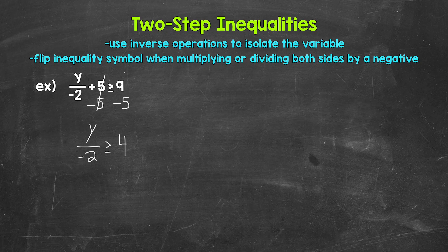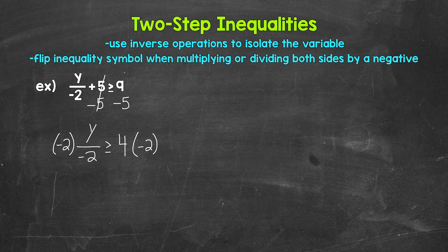So now we have y divided by negative two is greater than or equal to four. Since y is being divided by negative two, we need to undo that division using the inverse operation — that's multiplication. So let's multiply the left side by negative two. Whatever we do to one side, we must do to the other, so multiply the right side by negative two as well.